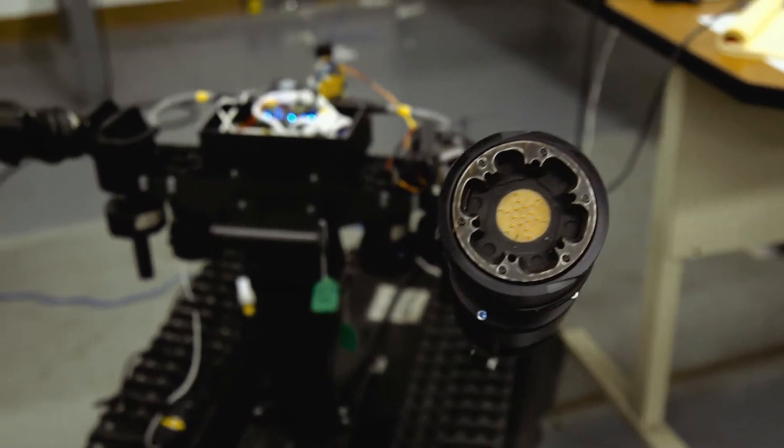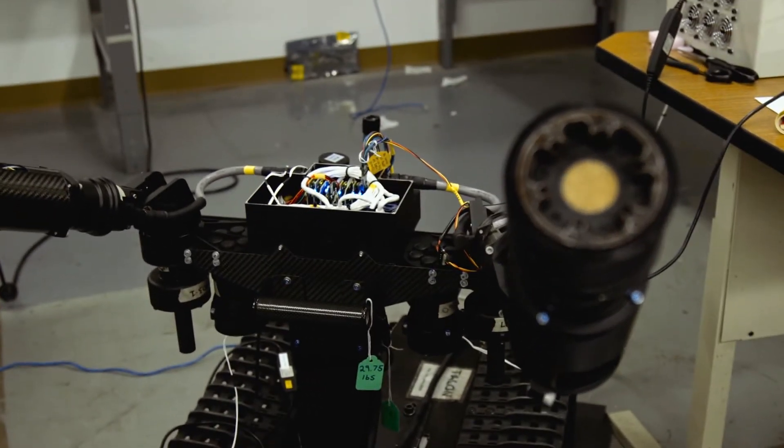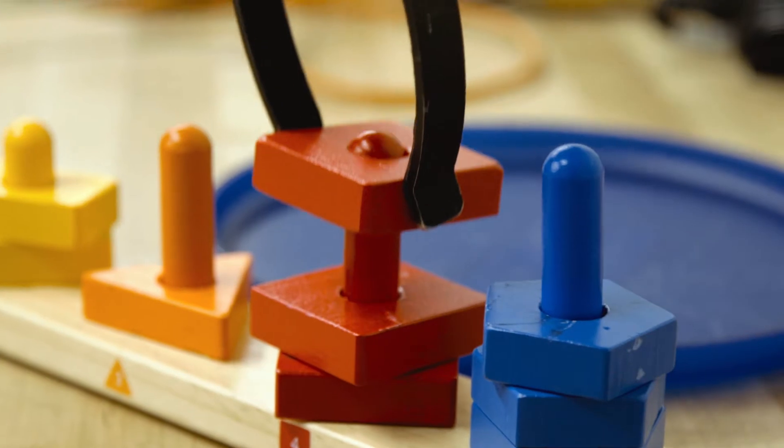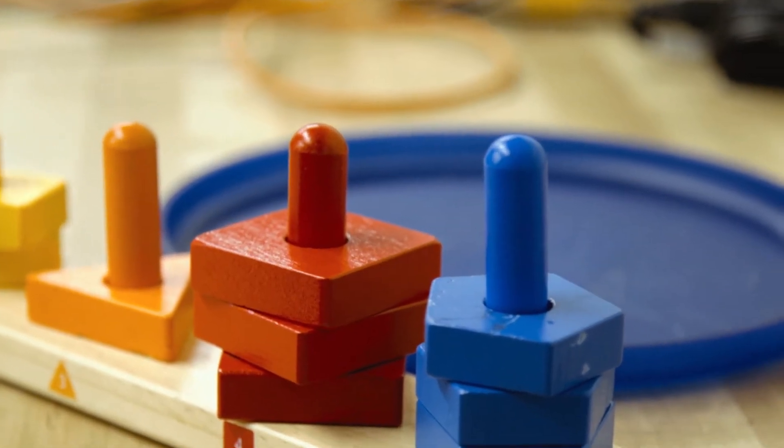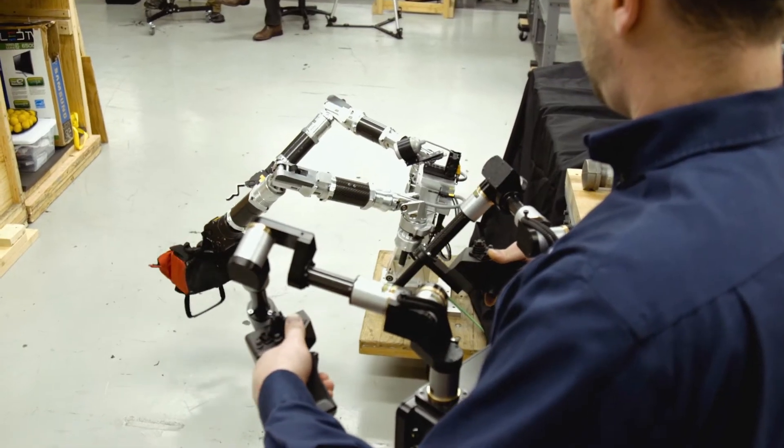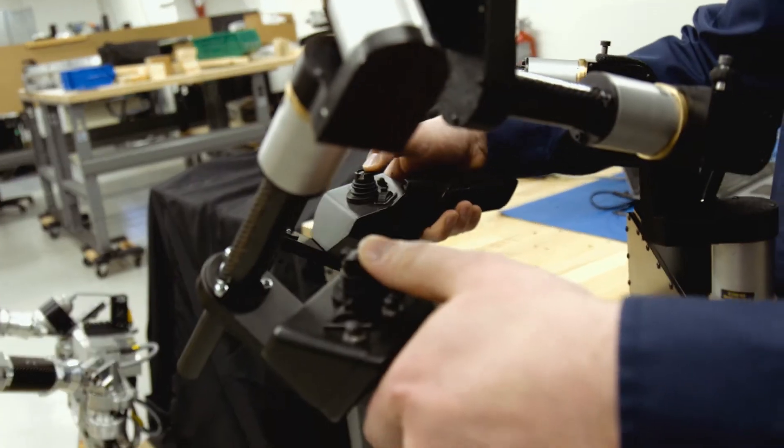Whether it's diffusing a bomb or whether it's helping a person move from a wheelchair to a bed, improving their quality of life, that's what we're trying to do is impact people's lives through the use of mobile robotic arms.